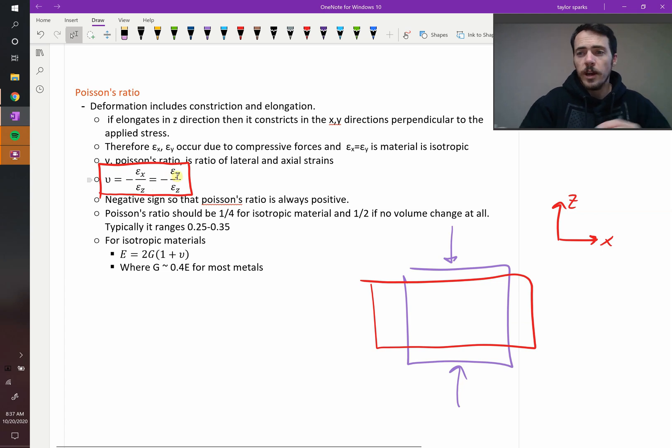Or we've done this in Y. So if this was our three dimensions, X, Y, Z, you could do the same thing. So if the strain is the same in the X and the Y directions, then it's isotropic.